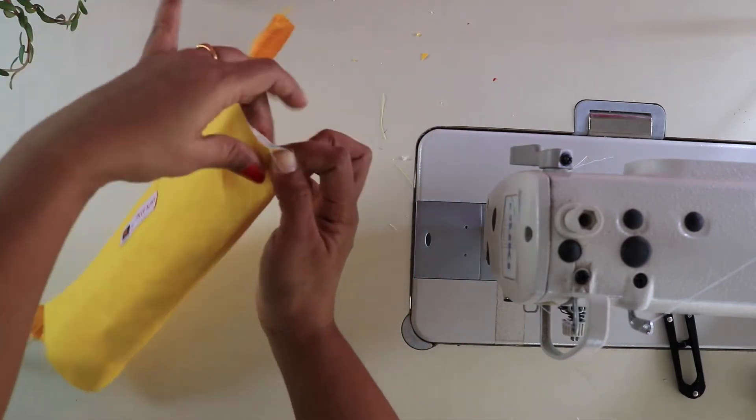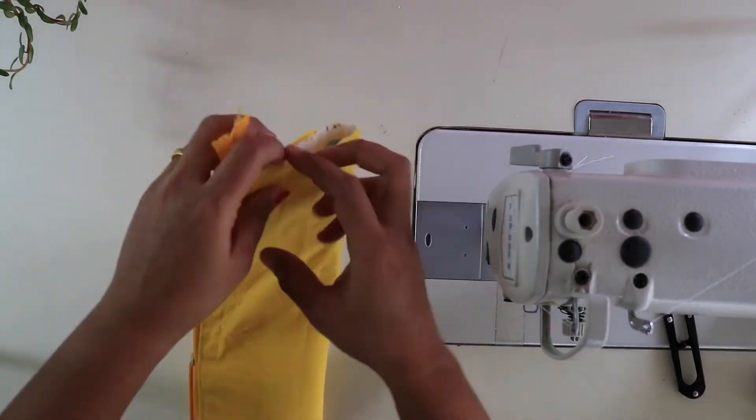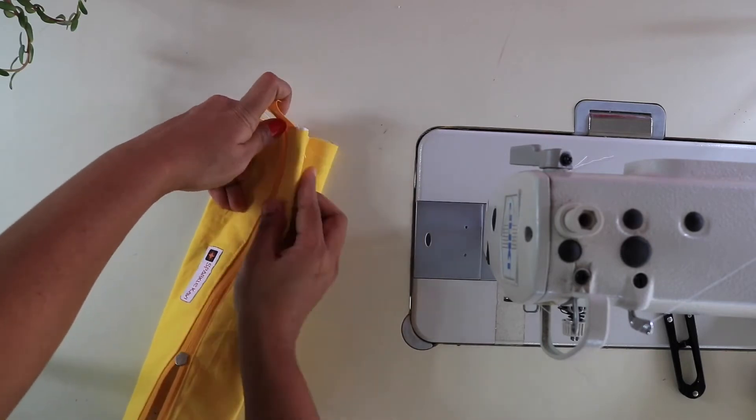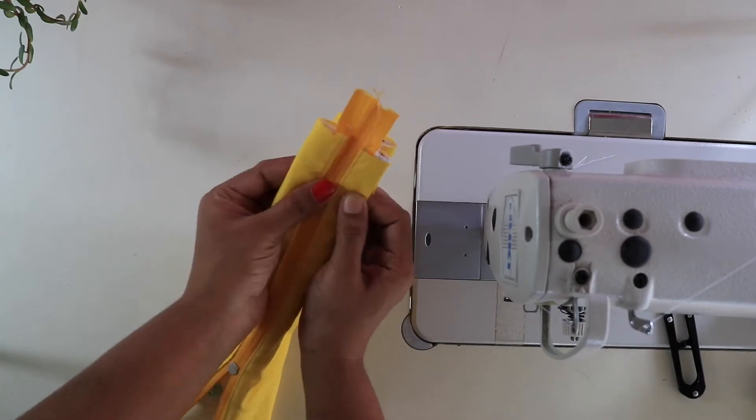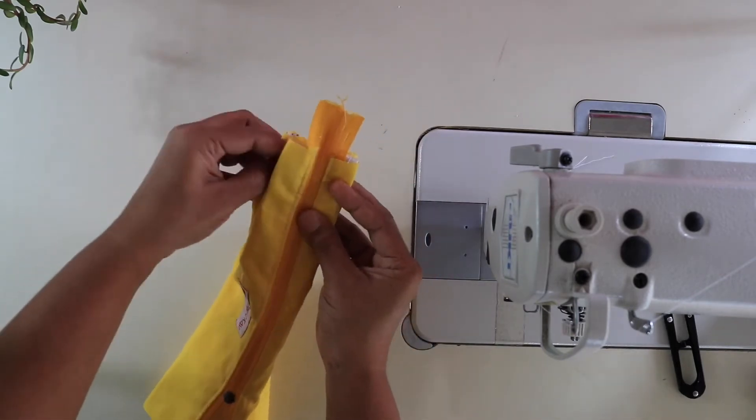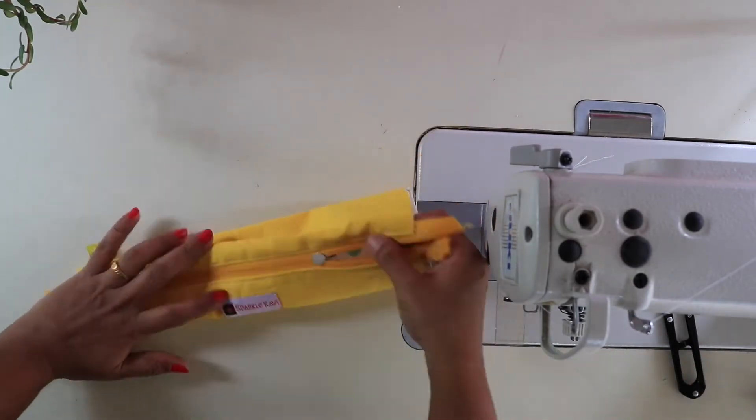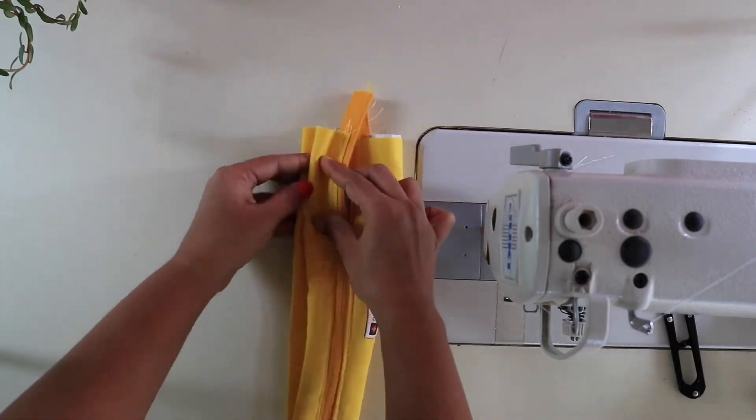Repeat the same for the opposite side also. Now, first lay the fabric flat, then fold both the sides inside so that all the three notches meet at the center of the zipper tape. Clip them in place. Repeat the same for the opposite side also.